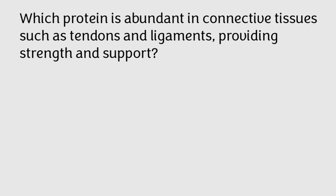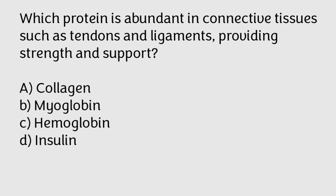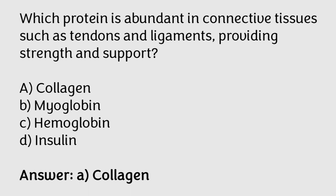Which protein is abundant in connective tissues such as tendons and ligaments providing strength and support? Collagen, myoglobin, hemoglobin, insulin. The correct answer is option A. Collagen protein is abundant in connective tissues such as tendons and ligaments providing strength and support.